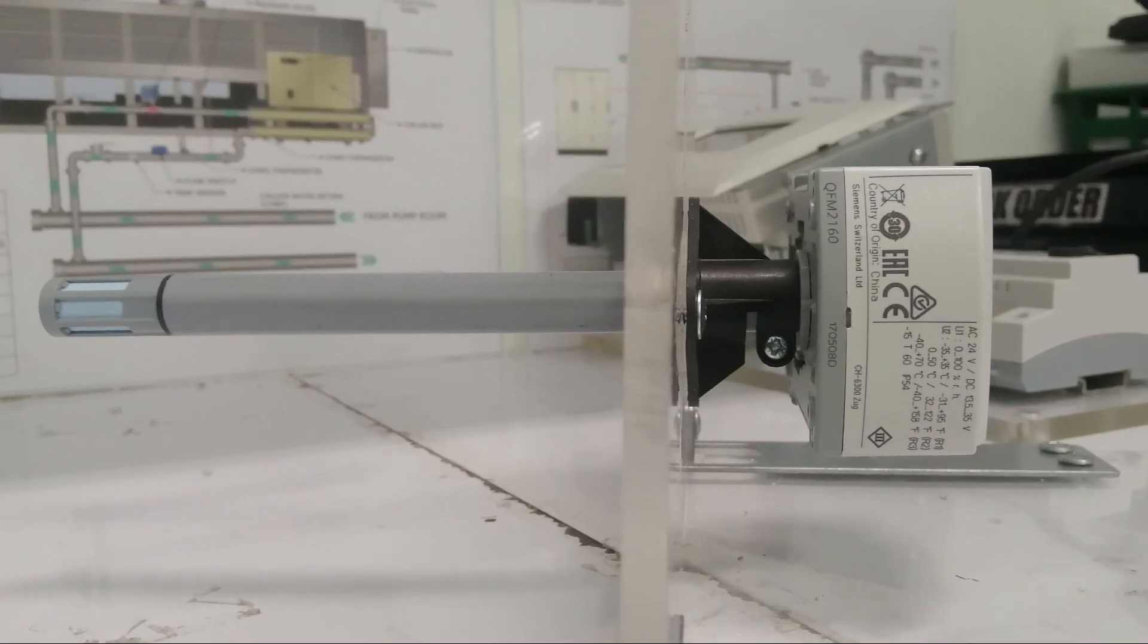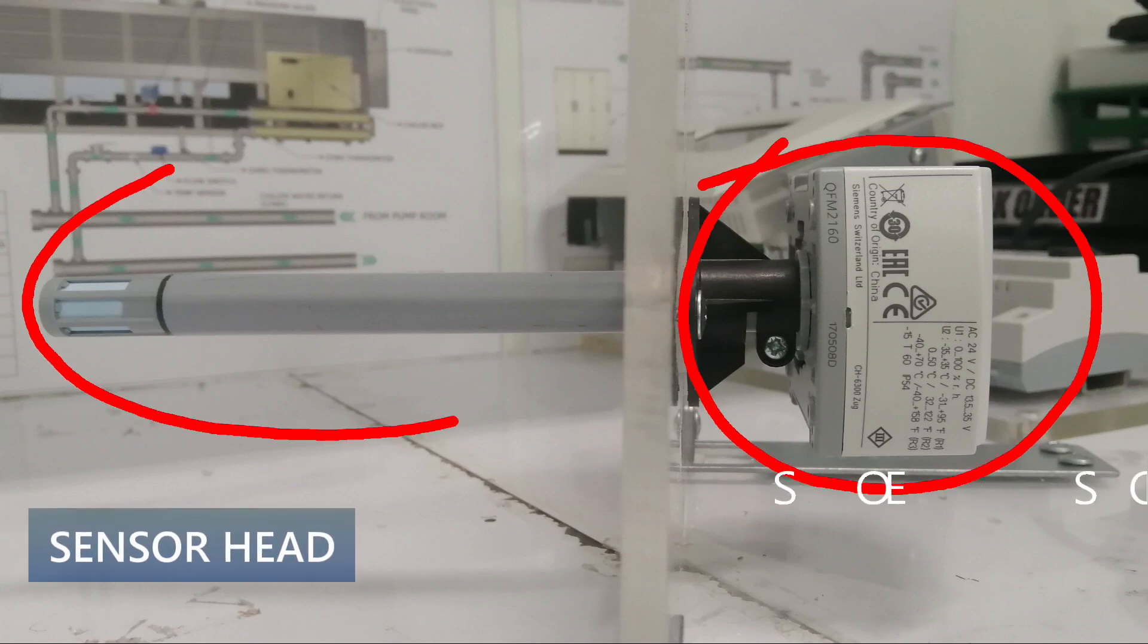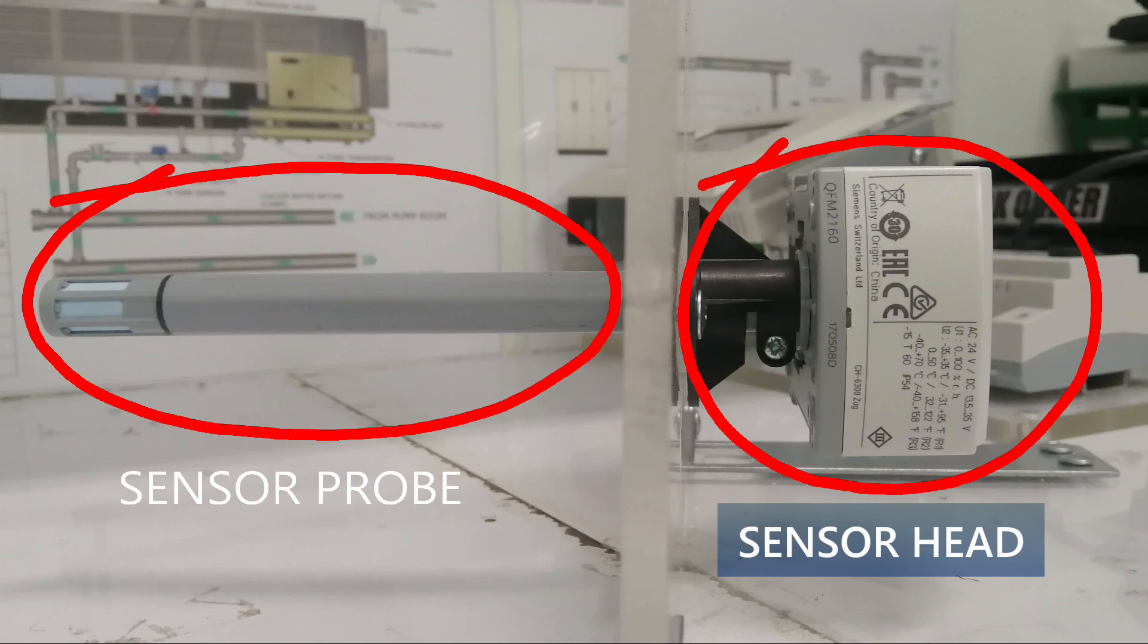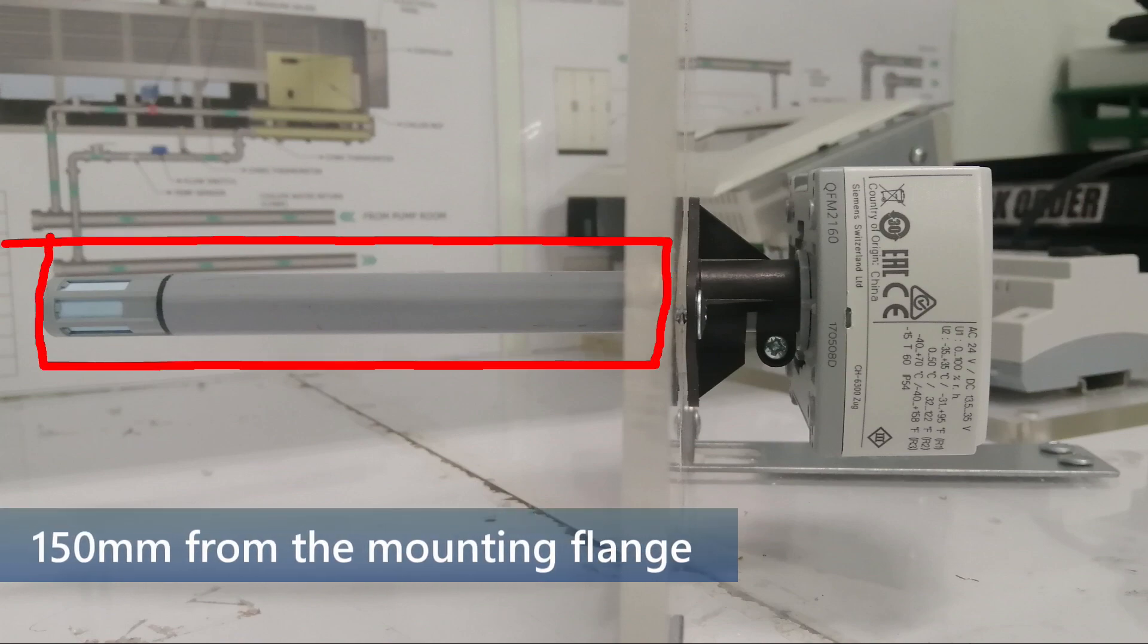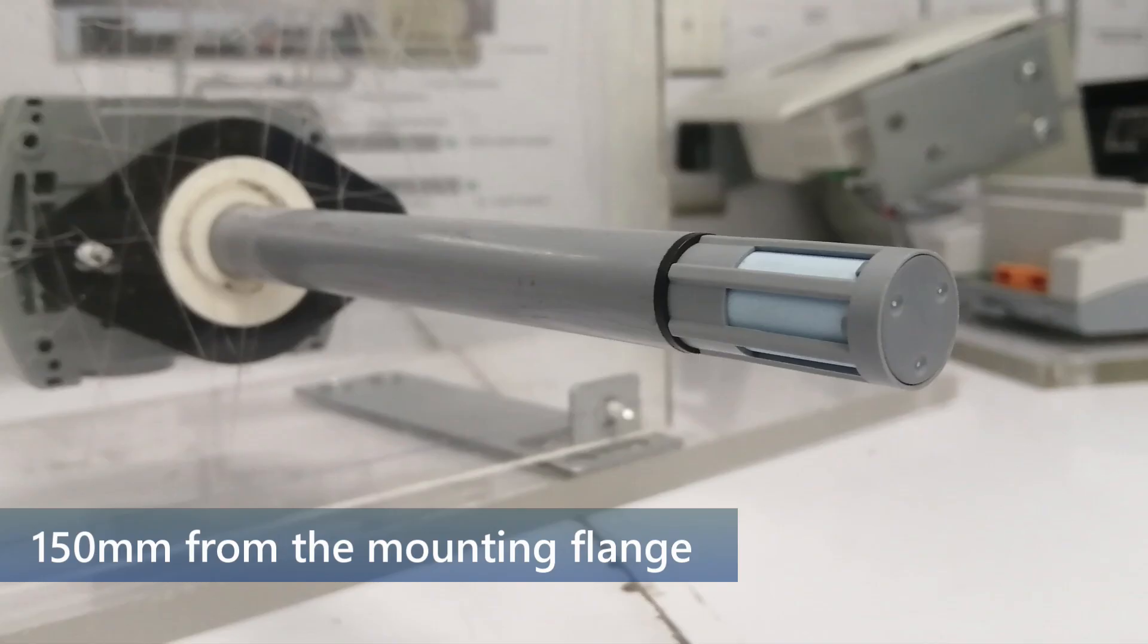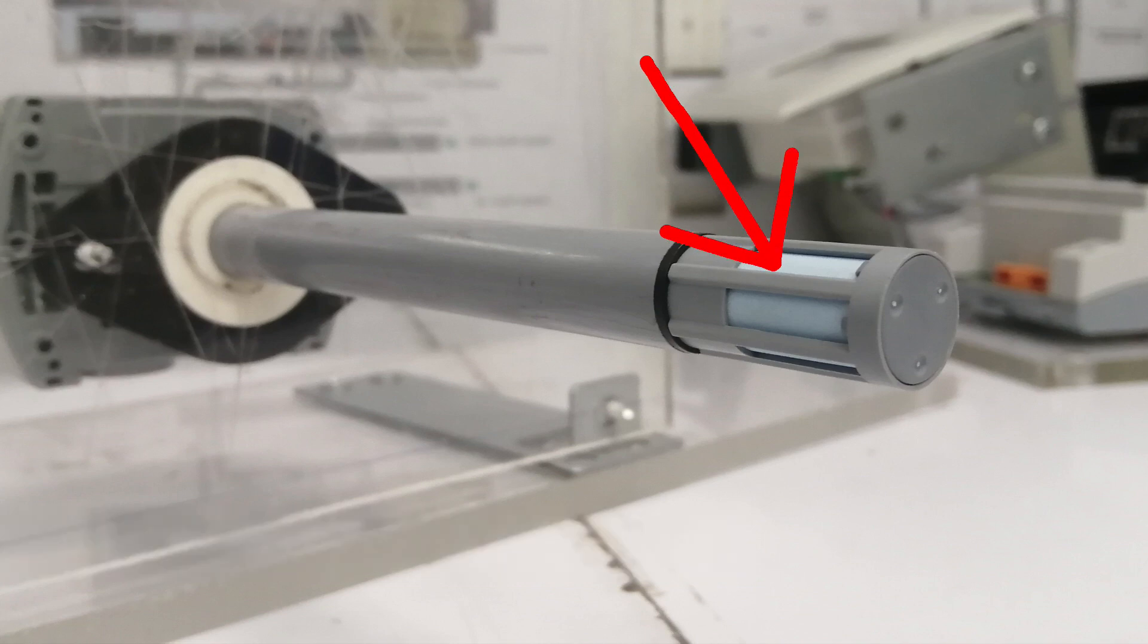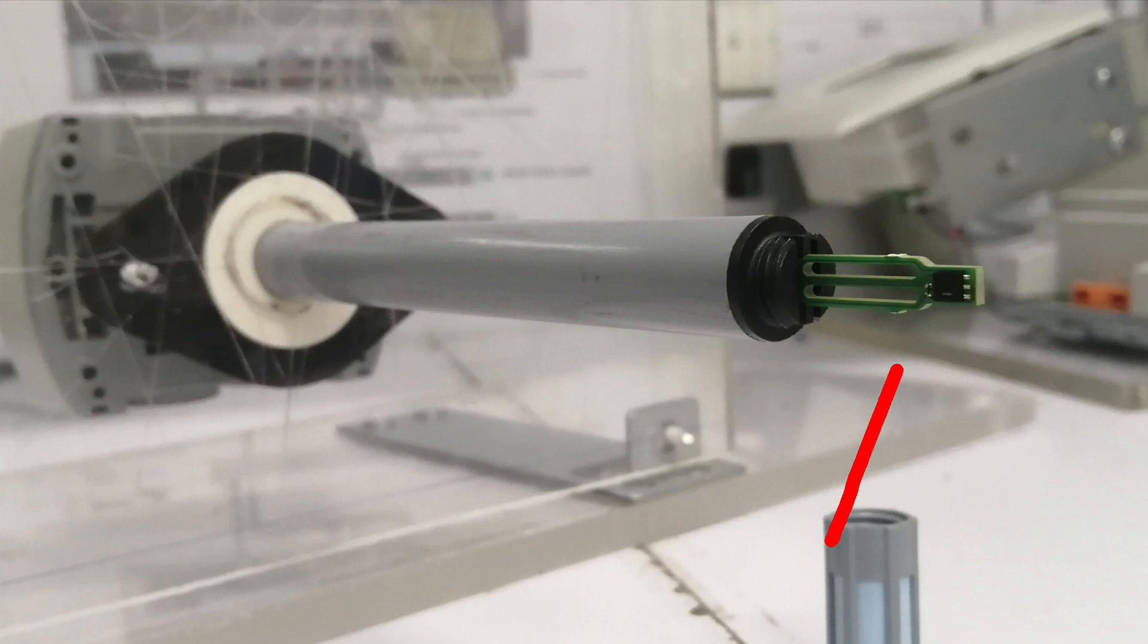This is Siemens QFM 2160. There are two sections: the sensor head and the probe. Sensor probe length is approximately 150 millimeter from the mounting flange. At the end of the probe there is a filter cap. Inside this filter cap is where the sensing element is located.